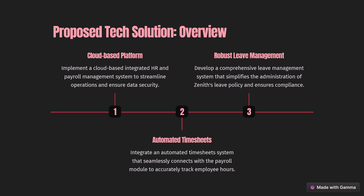The second solution is automated timesheets: integrate an automated timesheet system that seamlessly connects with the payroll module to accurately track employee hours. The third solution is robust leave management: develop a comprehensive leave management system that simplifies the administration of Zenith's leave policy and ensures compliance. So the three main solutions offered are: a cloud-based platform, automated timesheets, and robust leave management.